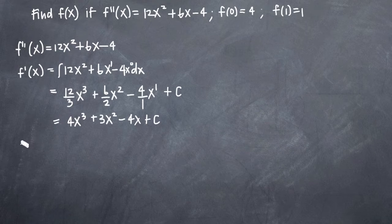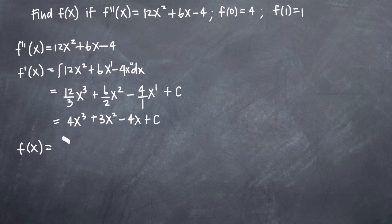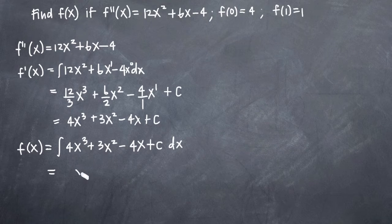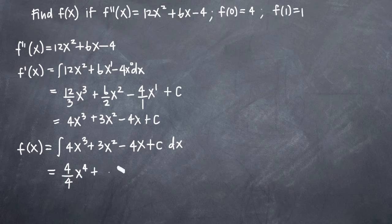Now we need to go ahead and get to the original function f of x. To get f of x, we'll need to take the integral again of the first derivative function f prime of x. So we'll be taking the integral of 4x cubed plus 3x squared minus 4x plus c, and again add dx notation. For 4x cubed, to take the integral again, we'll add 1 to the exponent — 3 plus 1 gives us 4 — and we'll divide our coefficient, 4, by our new exponent, 4. Same thing for 3x squared: we add 1 to the exponent to get x cubed, and then divide the coefficient by the new exponent.